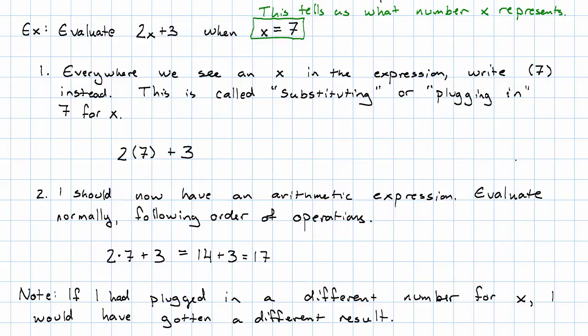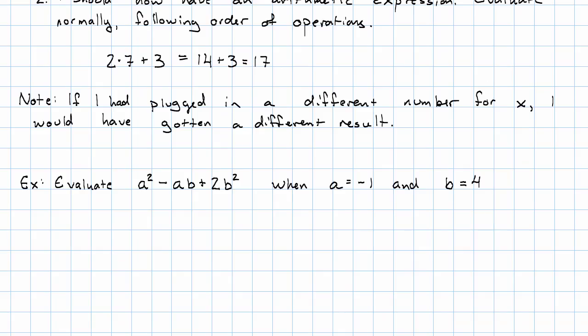Evaluating expressions where the variable appears several times or where there are several different variables can get a little bit trickier. So let's say we want to evaluate the expression a squared minus ab plus 2b squared, when a is negative 1 and b is 4.